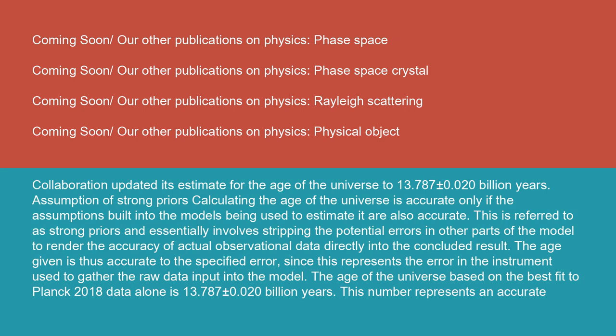Assumption of strong priors: Calculating the age of the universe is accurate only if the assumptions built into the models being used to estimate it are also accurate. This is referred to as strong priors and essentially involves stripping the potential errors in other parts of the model to render the accuracy of actual observational data directly into the concluded result. The age given is thus accurate to the specified error, since this represents the error in the instrument used to gather the raw data input into the model.